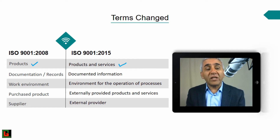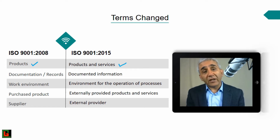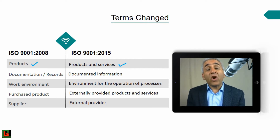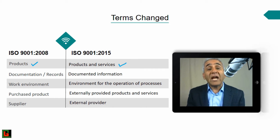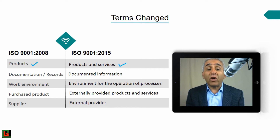Another change in terminology involves documentation and records. Earlier, 'documents' referred to rules and instructions for activities to be done, while 'records' were evidence of those activities having been completed — you perform an activity based on a document and record the result. In 2015, these two terms have been combined into a single term called 'documented information.'